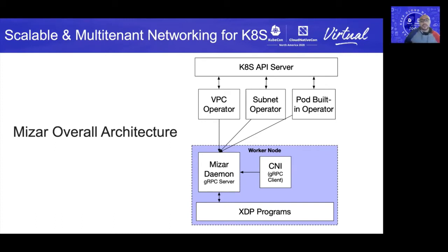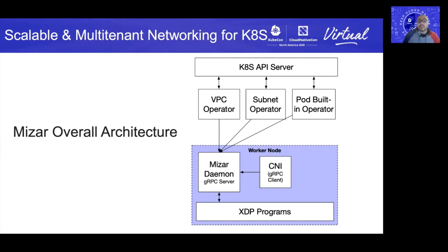From a high level, Mizar consists of CRD operators, a daemon, and a CNI. The operators, the daemon, and the CNI are Mizar's management plane components. The daemon exposes a gRPC interface for the operator and the CNI. We eliminate any API calls from the worker nodes to the API server. This prevents operator failures from amplifying as we add more workers to the cluster. On the data plane side, Mizar consists of a set of multiple XDP programs that process node packets. In this architecture, we rethink the data plane programming model to scale the management plane, accelerate pod provisioning, and develop customized logic for network services. As a result, Mizar enables scalable and multi-tenant Kubernetes networking.